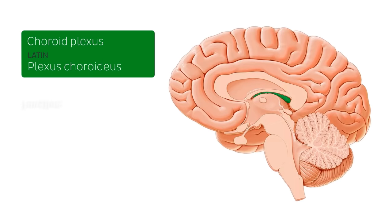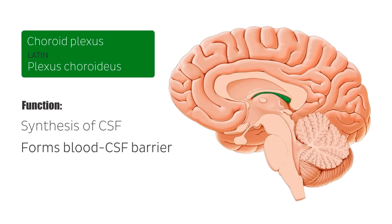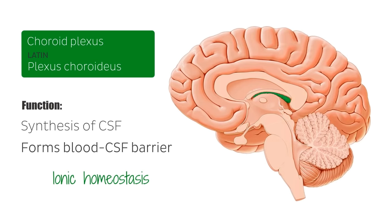In addition to synthesizing cerebrospinal fluid, the choroid plexus forms a blood-cerebrospinal fluid barrier, which helps to maintain homeostasis of the internal environment of the brain and the central nervous system in general, especially during development. This barrier, composed of the choroid epithelium, separates blood flow around the brain from the cerebrospinal fluid, and maintains ionic homeostasis by controlling the movement of small ions and other substances from the blood side to the cerebrospinal fluid side.